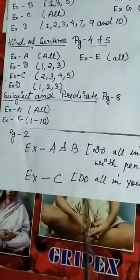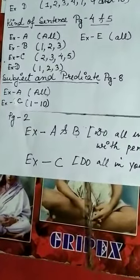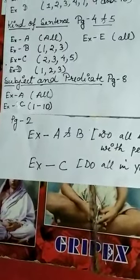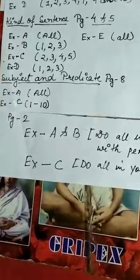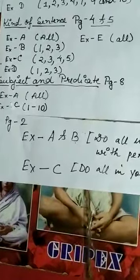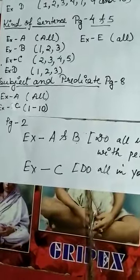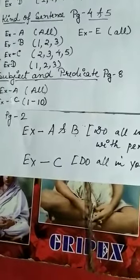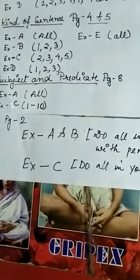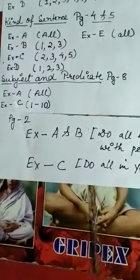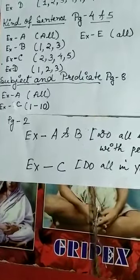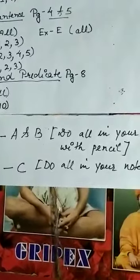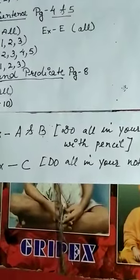Page number 4 and 5 — that is kinds of sentences. Exercise A: all. Exercise B: 1, 2, 3. Exercise C: 2, 3, 4, 5. Exercise D: 1, 2, 3. Exercise E: all.